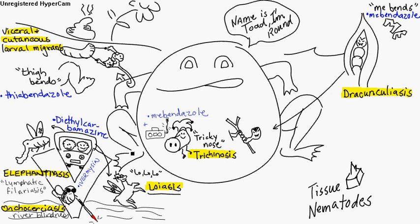These are the tissue nematodes. We've got the visceral and cutaneous larval migrans. They want to migrate from the feces and the soil and get into skin. They cannot mature in humans, but there's the visceral dog and cat ascarids from their feces. It goes to the viscera of the liver, the lung, and the eye. You've got to treat with corticosteroids and thiabendazole. Cutaneous larval — they penetrate the skin from infested soil and you've got to treat with thiabendazole.